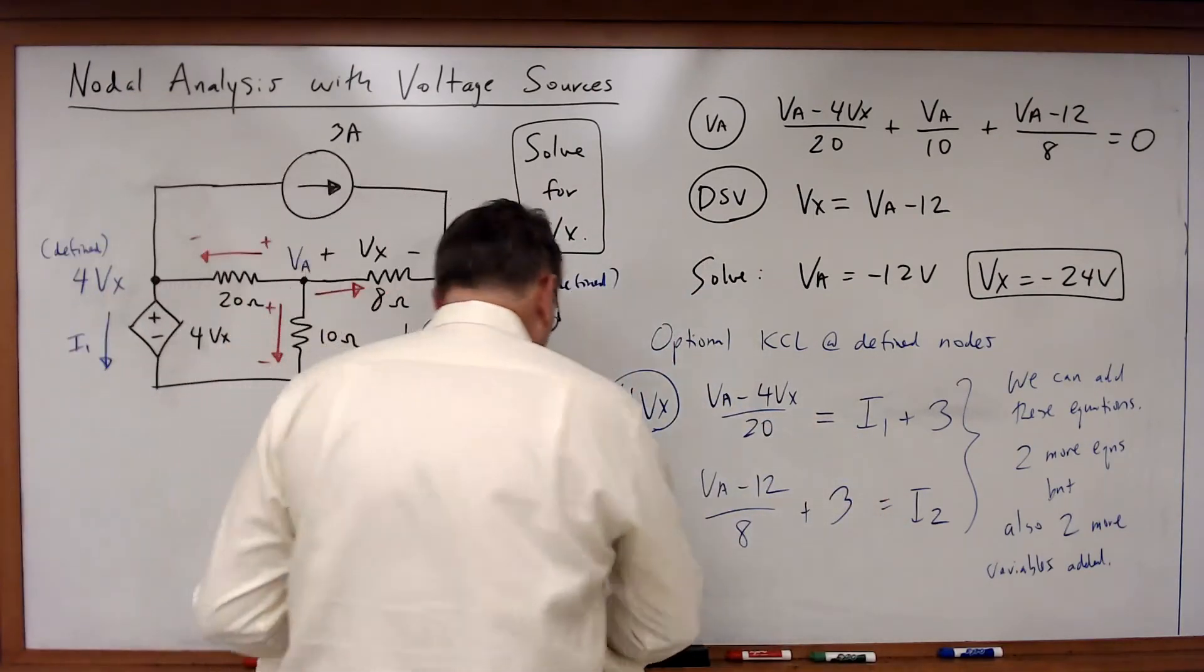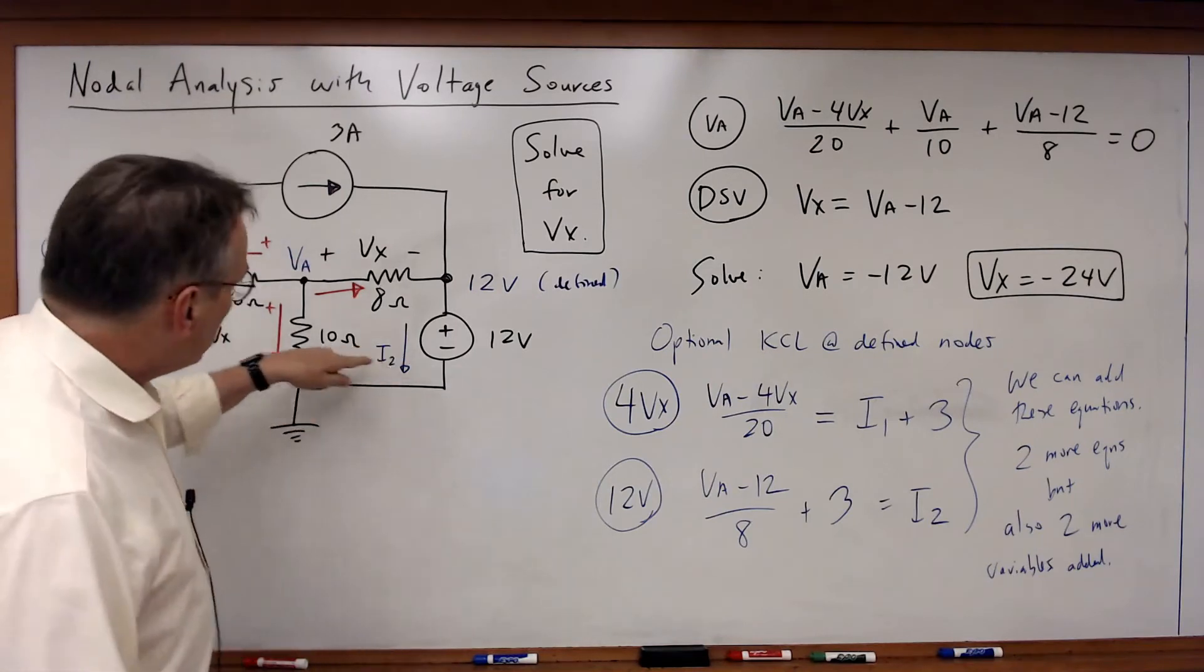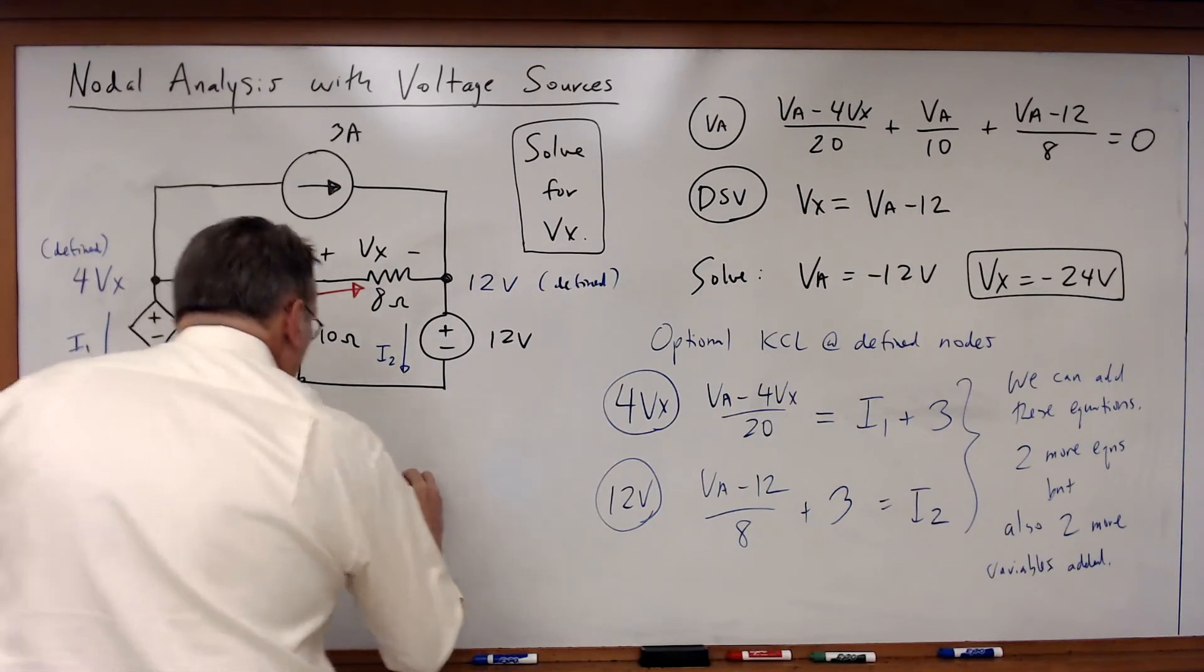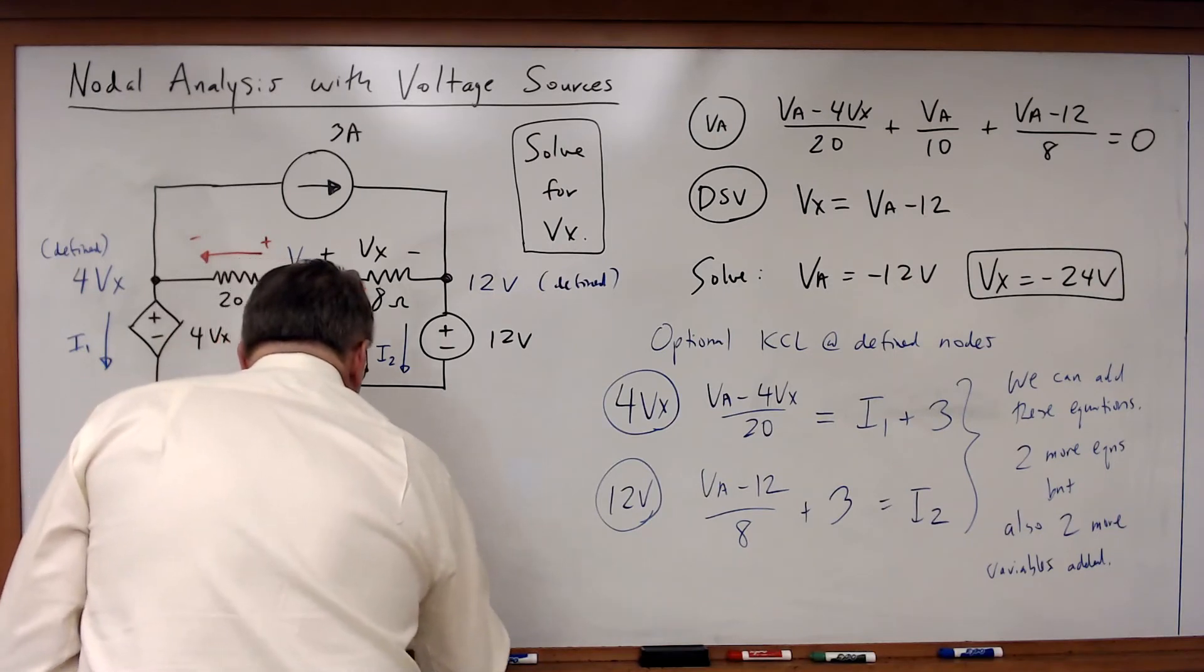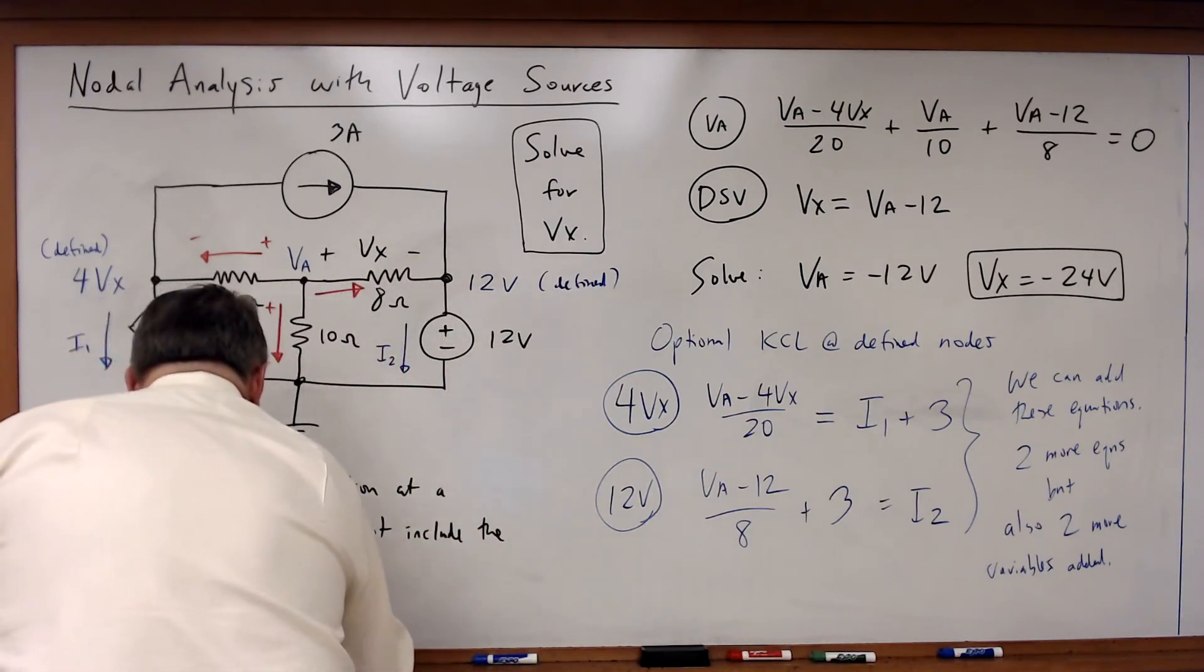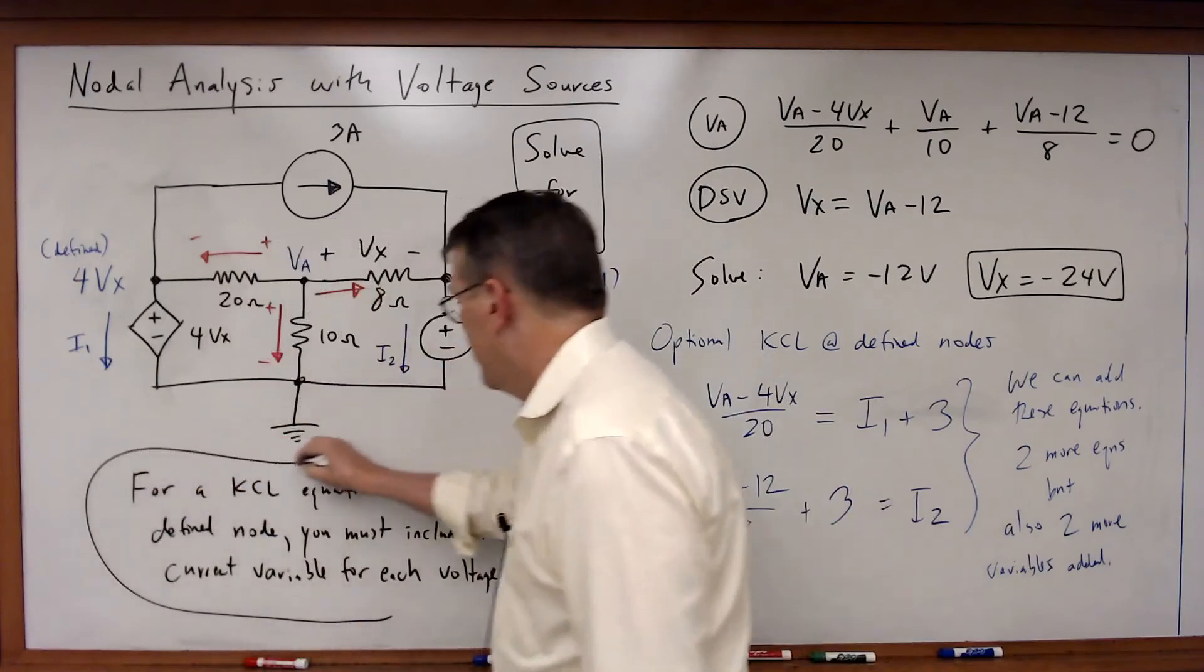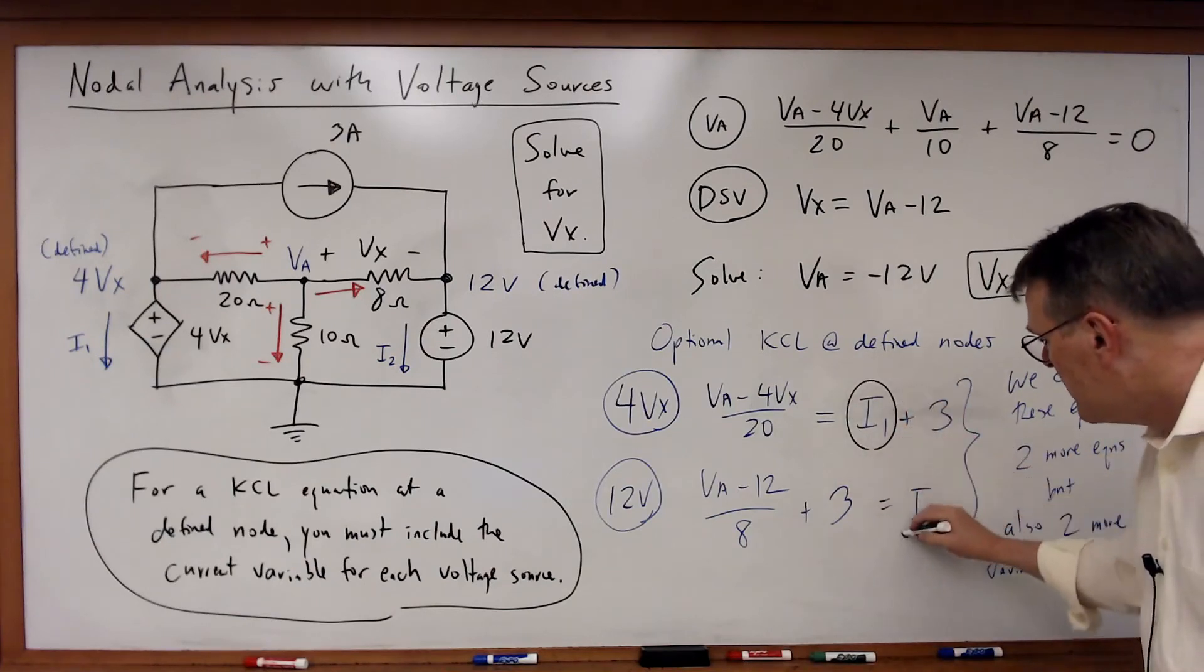So once again, to reiterate a point I made before, if you are going to write a KCL equation at a defined node, you must include the current flowing through the voltage source. Very important principle. These KCL equations are optional, but if you choose to use them, you've got to remember to include those two currents.